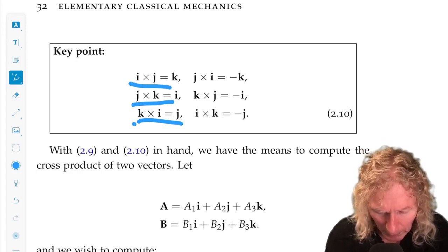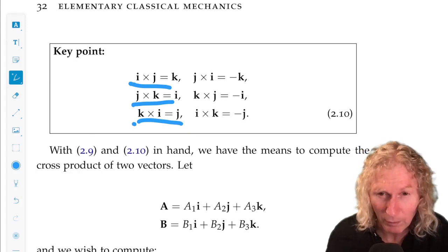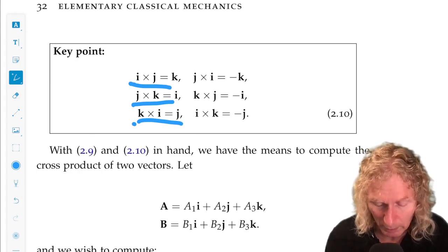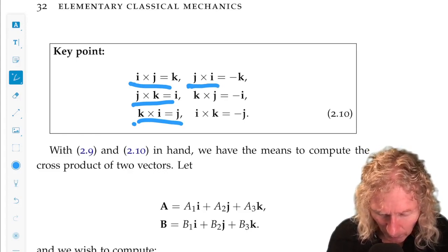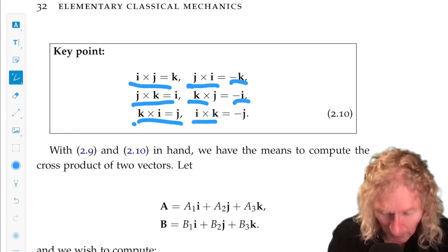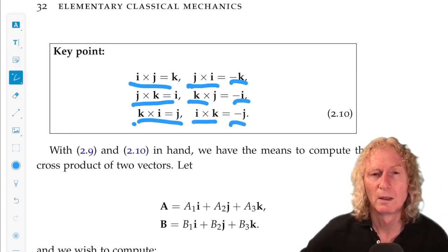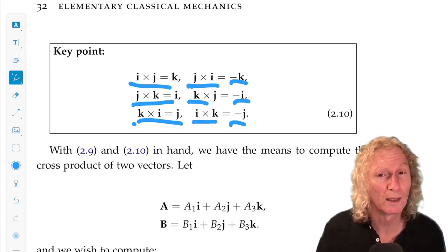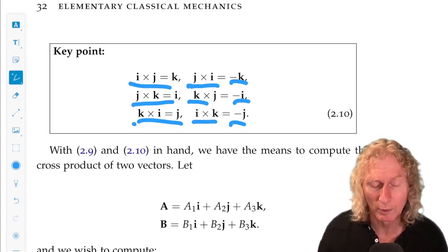But also, you can also at the same time easily verify from the definition that j cross i is minus k, k cross j is minus i, and i cross k is minus j. The vector perpendicular to that in the right-hand sense is the opposite direction.